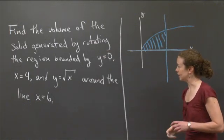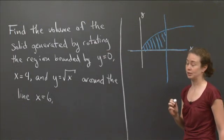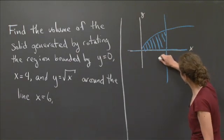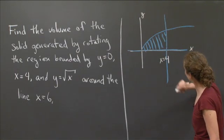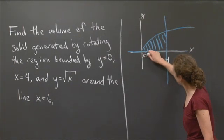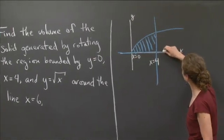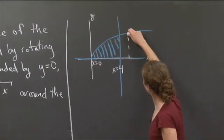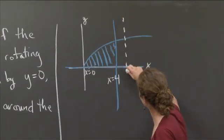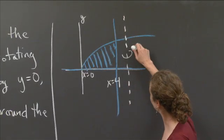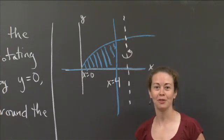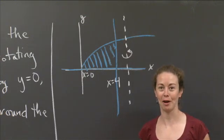And my rotating line, in this case, is x=6. To give myself some perspective, I remember this is x=4, here's x=0, so x=6 may be right about here. I'll draw a dotted line and draw a little arrow around there so I know that's the line I'm rotating about.